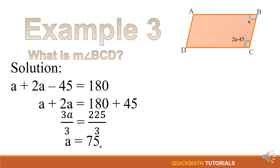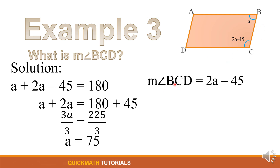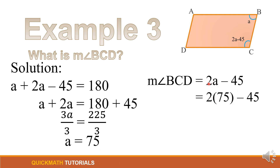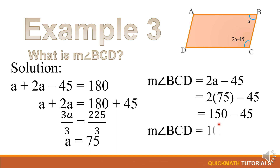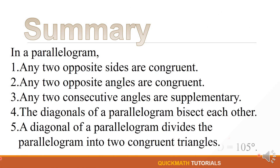We still need to find the measure of angle BCD, which is 2a − 45. Substituting a = 75: 2(75) − 45 = 150 − 45 = 105. Therefore, the measure of angle BCD is equal to 105 degrees.